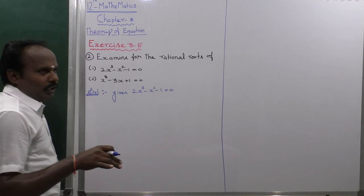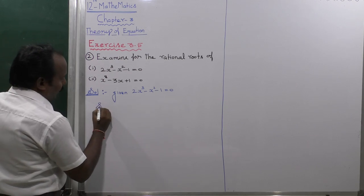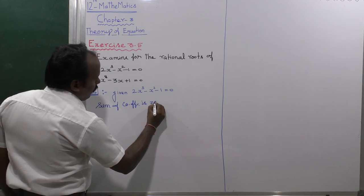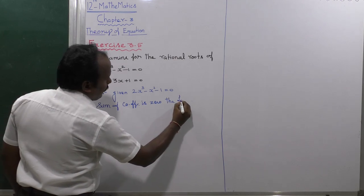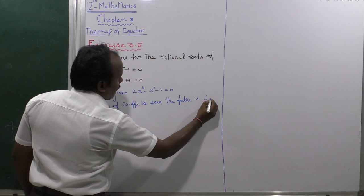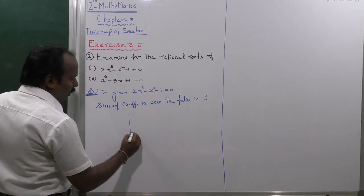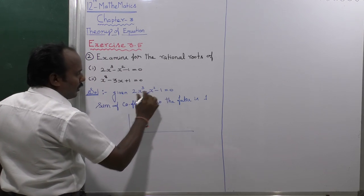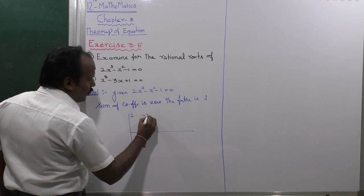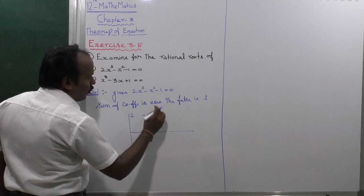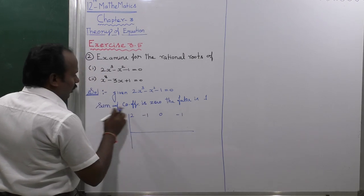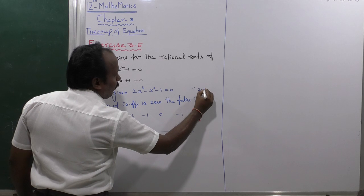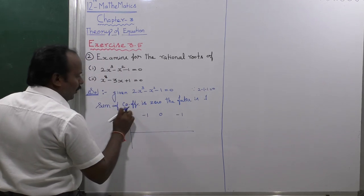If the sum of the coefficients is 0, then the factor is equal to 1. The coefficients are: 2 for x³, minus 1 for x², 0 for the x term (not present), and minus 1 as the constant. So the sum of coefficients is 2 minus 1 minus 1, which equals 0. Since the sum is 0, the factor is 1.